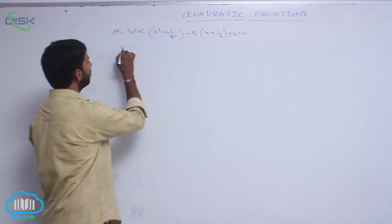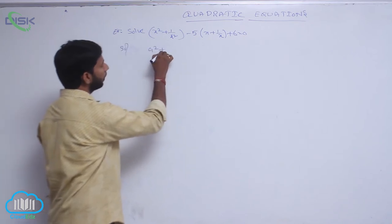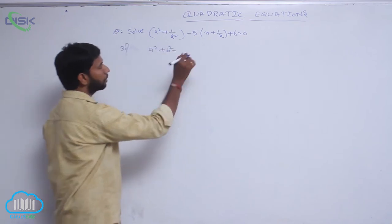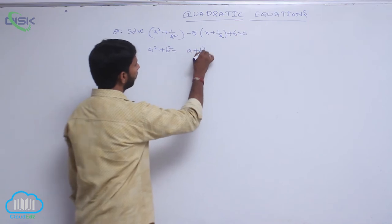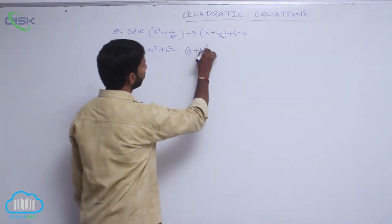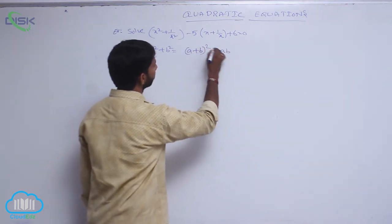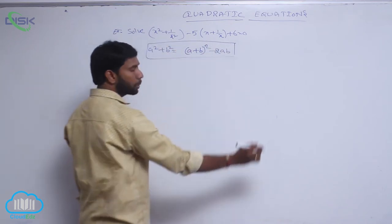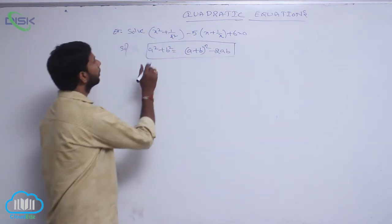The first term is of the form a squared plus b squared. Here, a squared plus b squared can be written as a plus b whole square minus 2ab. By using this formula, we split the factors.